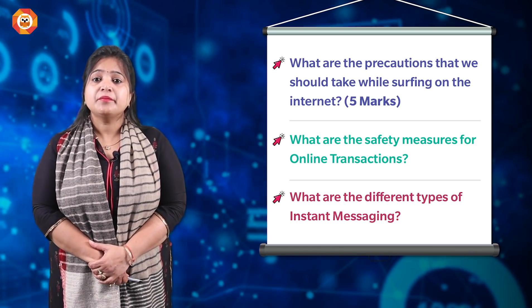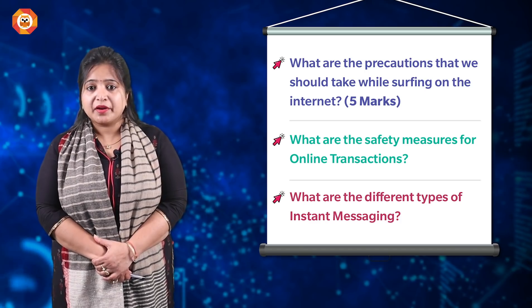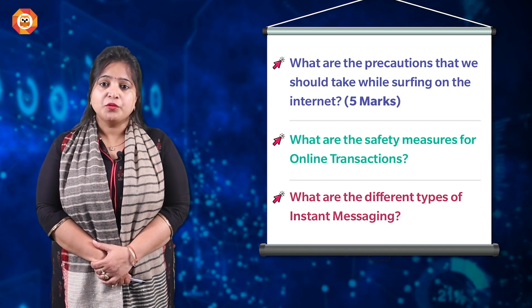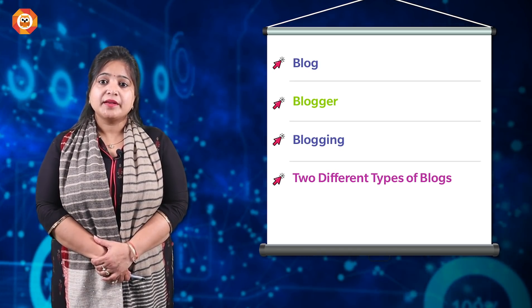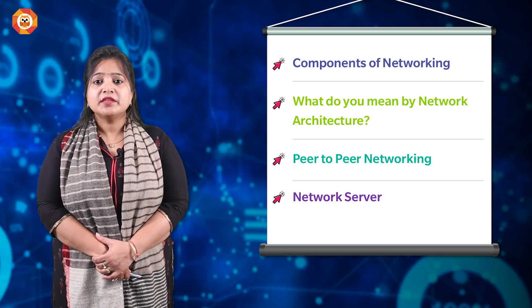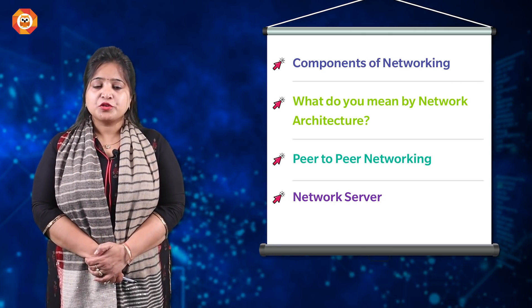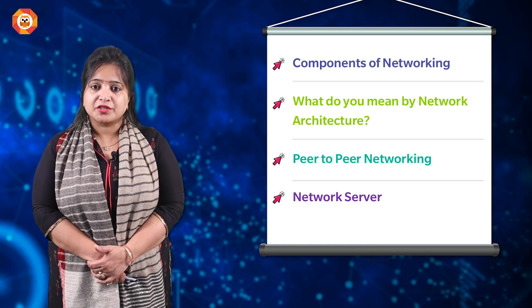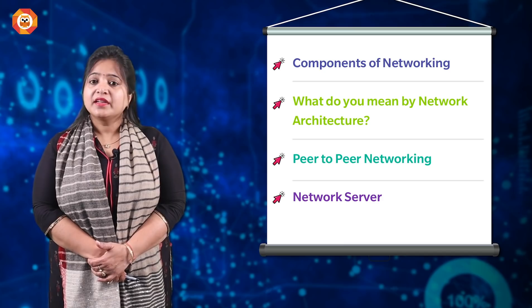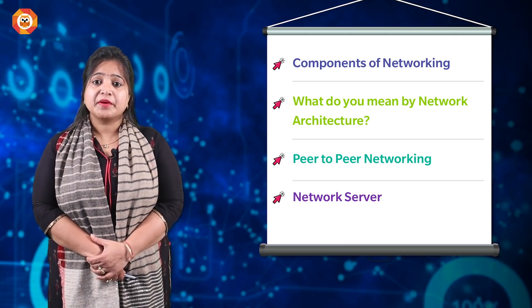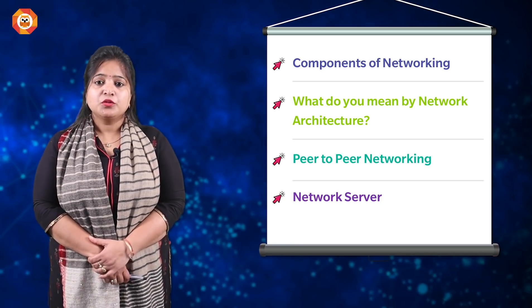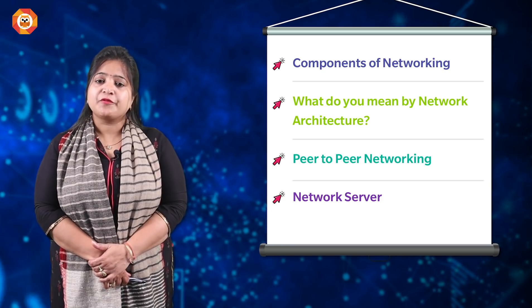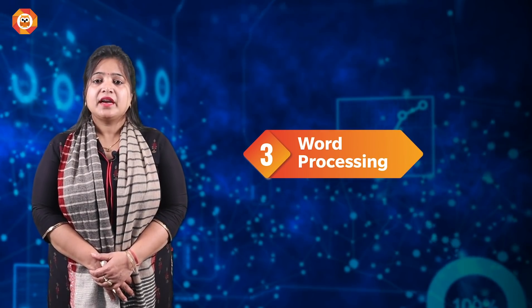What are the different types of instant messaging — map-based or application-based? You need to learn four features. Then, what do you mean by blog, blogger, and blogging, and what are the two different types of blogs? From the networking topic, you should cover the repeater, router, hub, switch, and what is meant by network architecture. These are the most expected questions from chapter two.